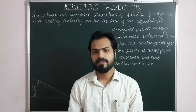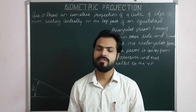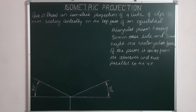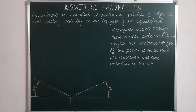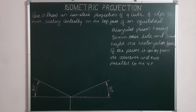Hello everyone, hope you have done the last problem which we discussed in the previous lecture. Now let's move to the next problem. Draw an isometric projection of a cube of edge 32 mm resting centrally on the top face of an equilateral triangular prism having 50 mm base side and 30 mm height. One of the rectangular faces of the prism is away from the observer and kept parallel to the VP.